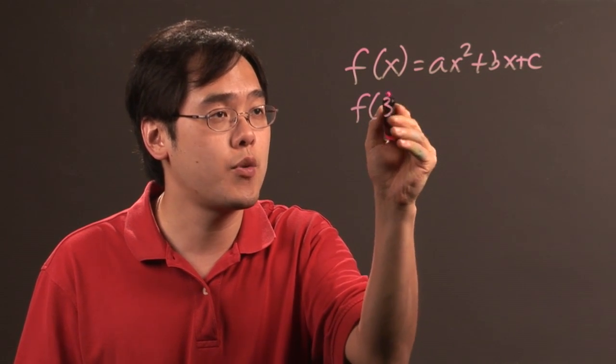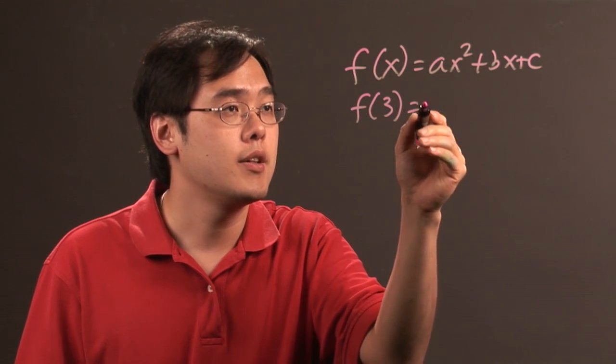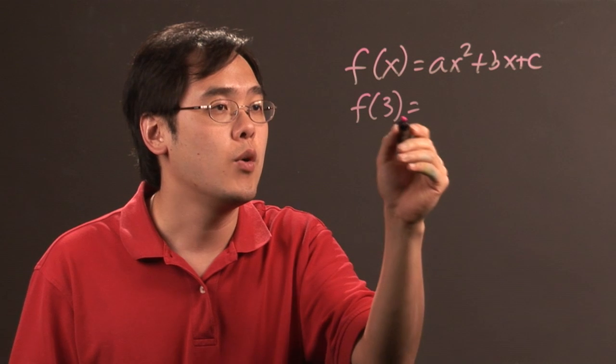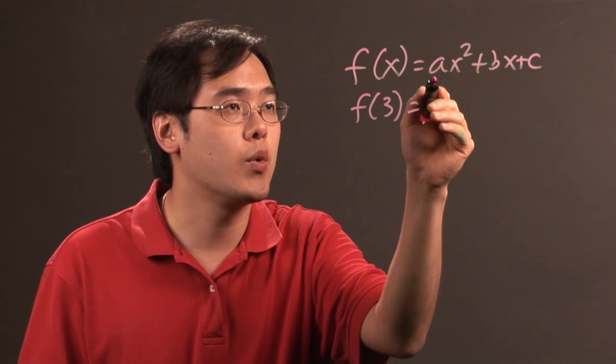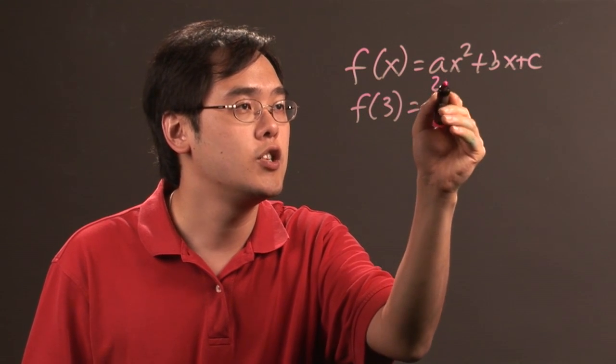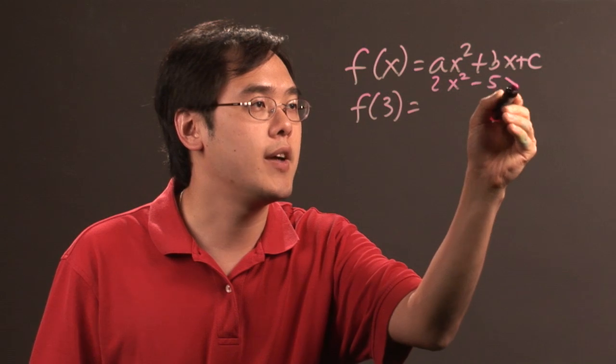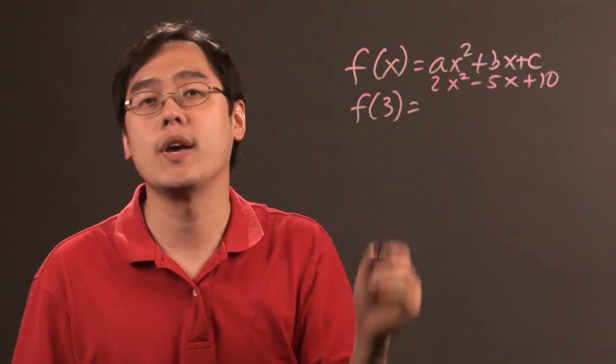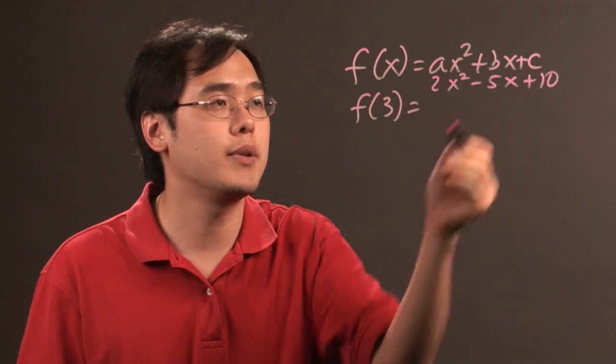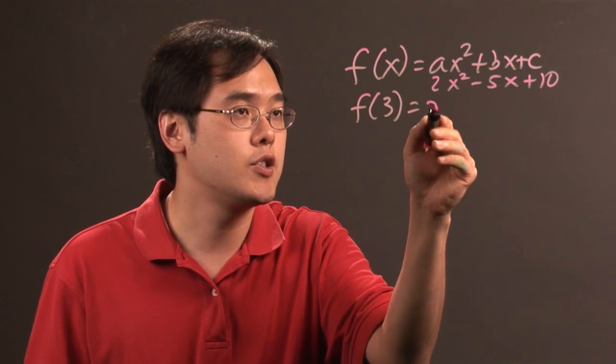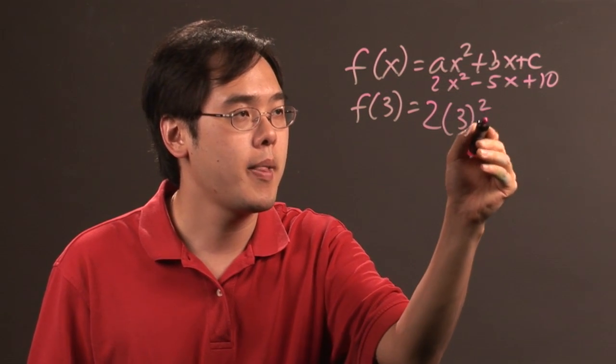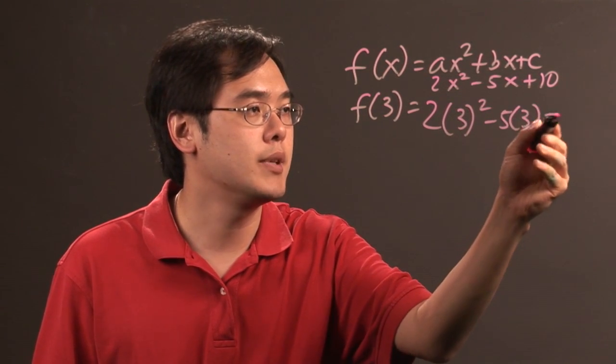So for example if you wanted to do f of 3, that means you're plugging in 3 in place of this. Now we're going to give you an example real quick. Let's just say if you have f was 2x squared minus 5x plus 10 and you're going to be finding out what f of 3 is, plug in 3 in place everywhere you see x. So you have 2 times 3 squared minus 5 times 3 plus 10.